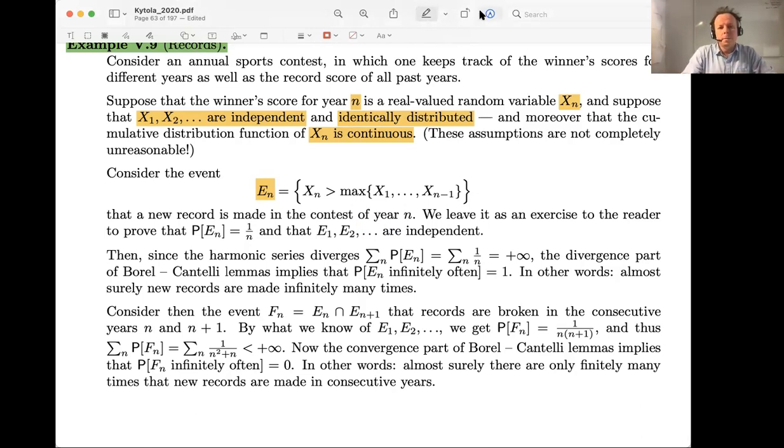With this setup, it's possible to prove that the probability of a record happening is 1 over n. It's also possible to prove that these are independent. These are not super simple. You need to do a bit of thinking, but it's possible to prove that the event that on a third year a record happens is independent of whether or not there was a record in the previous year. That sounds a bit counterintuitive, but with these assumptions, it's correct.